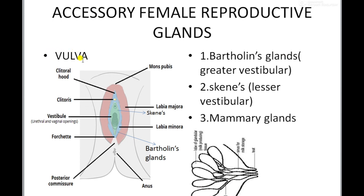The last part is the vulva, also known as external genitalia. It is present outside the body and is a visible structure of the female reproductive system, present in the pelvic region. The depression present is known as the vestibule, which contains two openings: the urethral opening and the vaginal opening. The vagina opens into the vestibule by an opening known as the vaginal orifice.